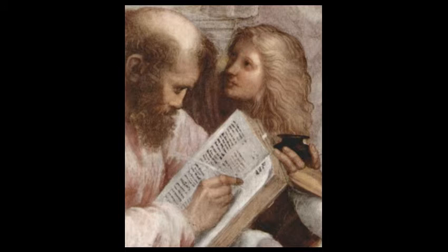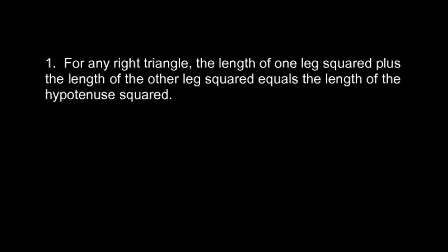And the Pythagorean theorem can be stated a few different ways. Here's one way to say it. For any right triangle, the length of one leg squared plus the length of the other leg squared equals the length of the hypotenuse squared.